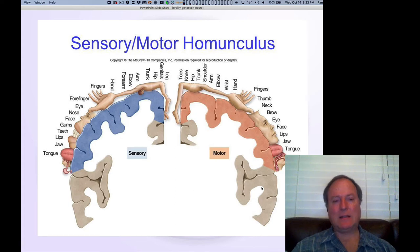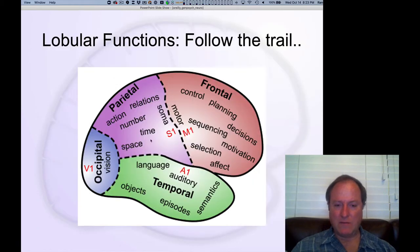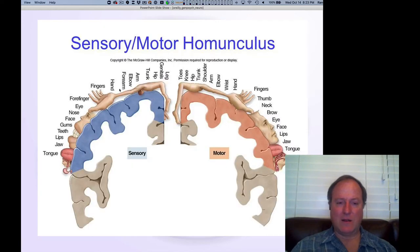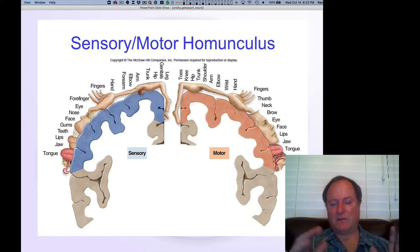Here's a picture of the classic sensory motor homunculus. The sensory part is on S1, organized along the principal sulcus that separates the posterior cortex, the back of the brain, from the frontal cortex, the front of the brain. On the back part, the posterior side, you have the sensory aspects.